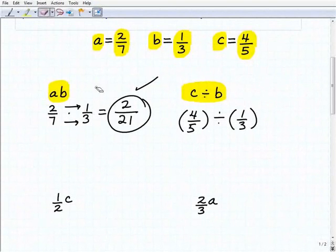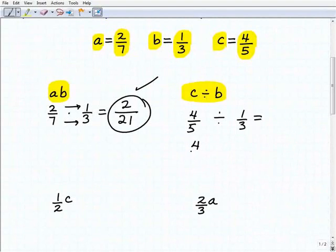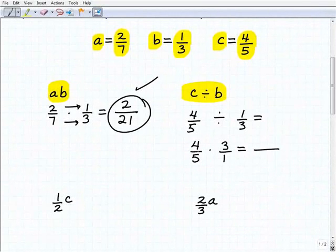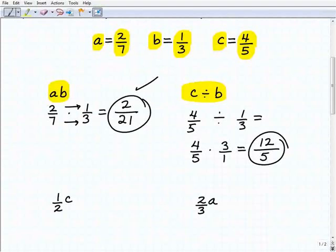So this is going to be four fifths divided by one third. So this is a real basic problem here. This would be four fifths times, and we're going to flip the divisor here, three over one. And then we'll go ahead and just do this basic multiplication of fractions. So four fifths times three over one will be 12 over five. And that is fully reduced, 12 fifths. And that's it. It's not too difficult.